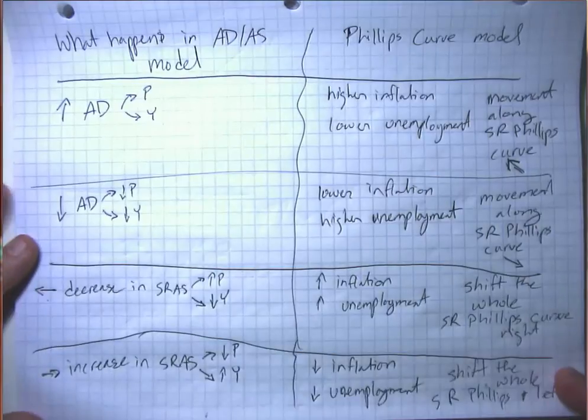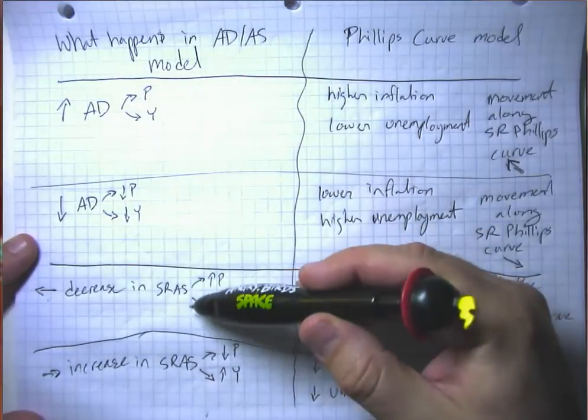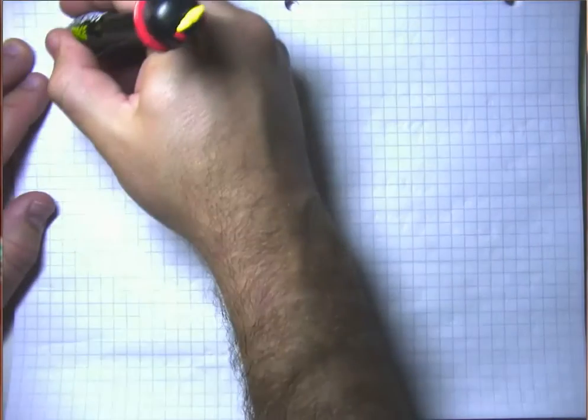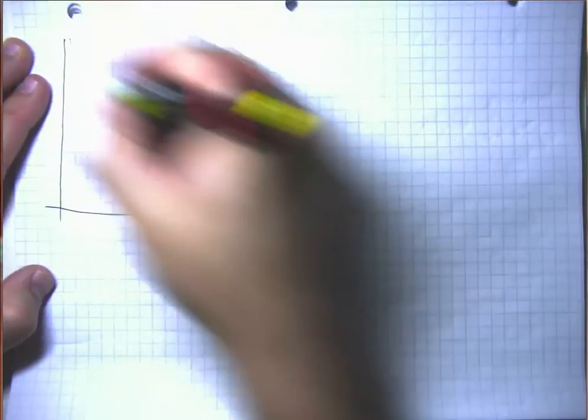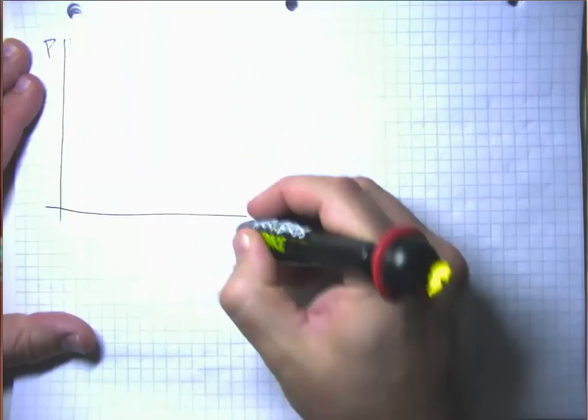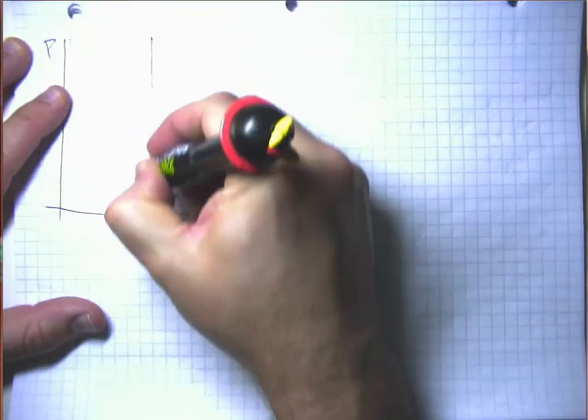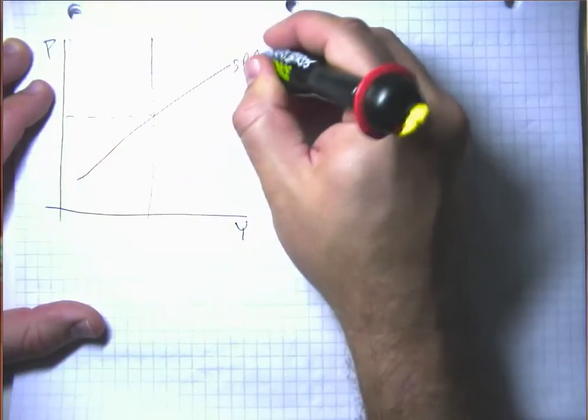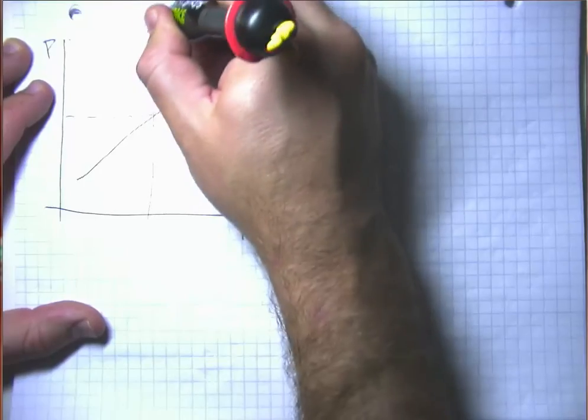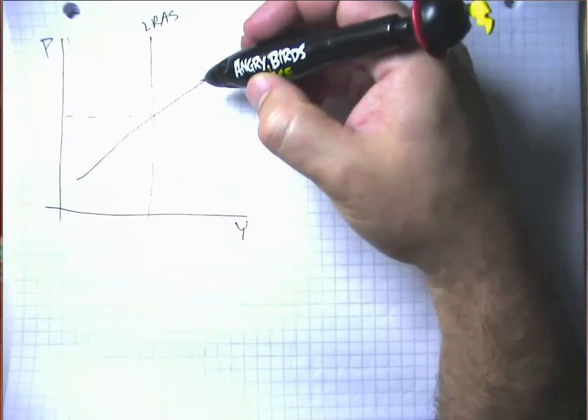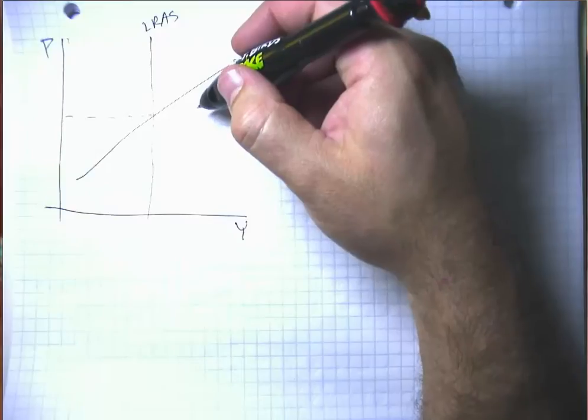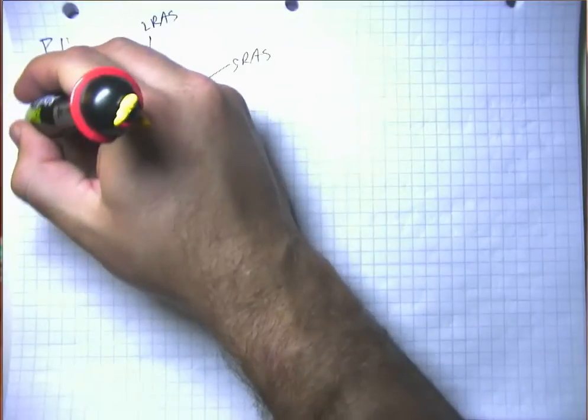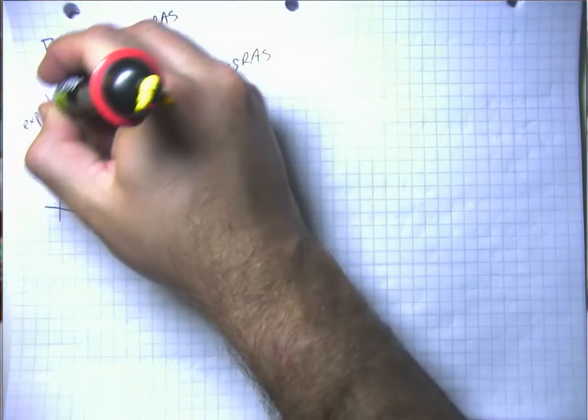Now, remember that the short-run aggregate supply curve crosses the long-run aggregate supply curve at the expected price level because essentially all of our explanations for why the short-run aggregate supply curve slopes up come down to people being slow to adjust to price changes or slow to notice price changes and that kind of stuff. So the intersection here is at the expected price level.